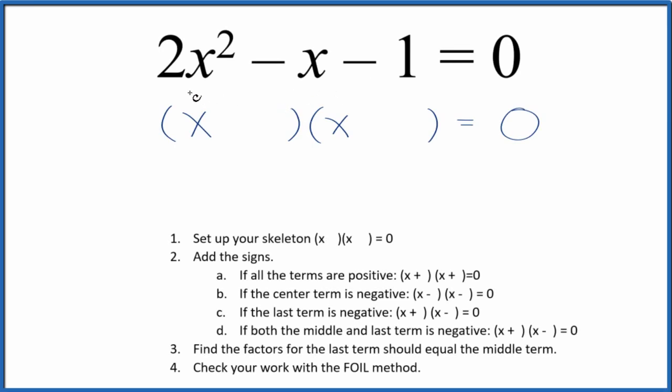I was asked to factor this equation, 2x squared minus x minus 1 equals 0. So here's how we'll do it.